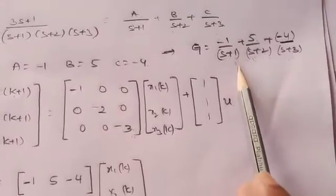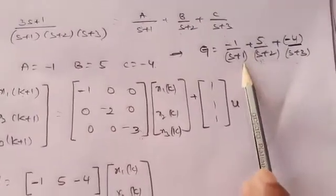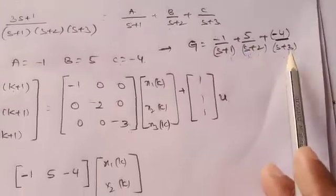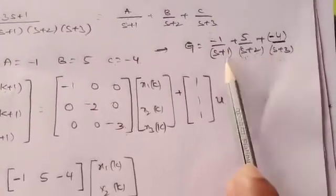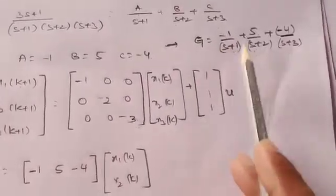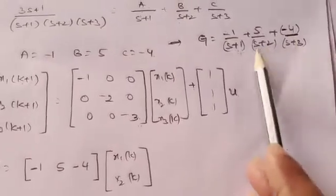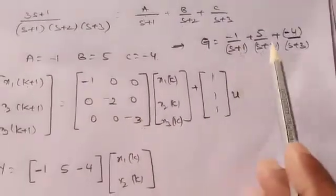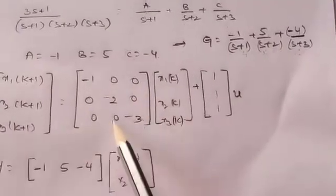Whenever we encounter repeated poles, the procedure will be different. In this problem, we do not have any repeated poles — we have distinct poles: s = −1, −2, and −3. As the name indicates, in diagonal form all poles are represented diagonally. Since no pole is repeated, the remaining elements are written as 0.